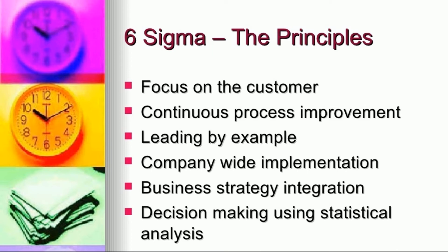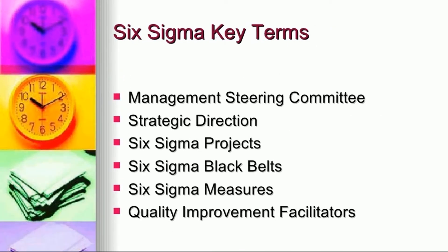Six Sigma differs from Lean because of its statistical analysis component. It uses concepts like normal distribution and process capability (Cp) — these are statistical terms used in Six Sigma. The key roles in Six Sigma include the management steering committee, strategic direction, Six Sigma projects, Black Belts, Green Belts, Yellow Belts, Master Black Belts, and quality improvement facilitators.